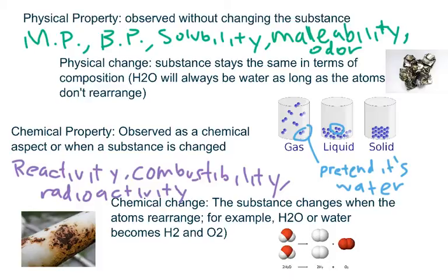One group of properties are known as physical properties and chemical properties. A physical property is a quality of a substance that can be observed without chemically changing the substance.